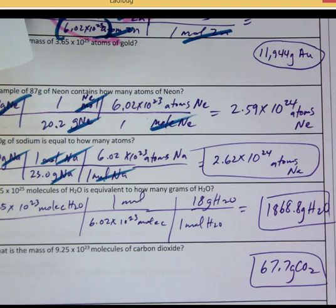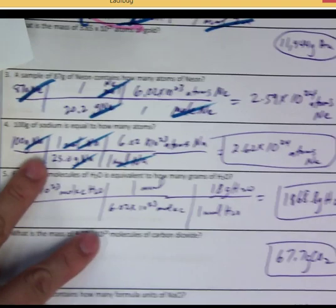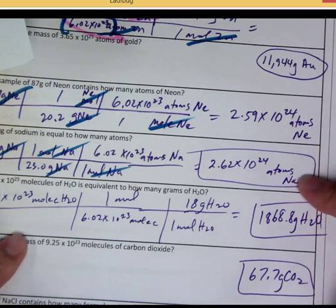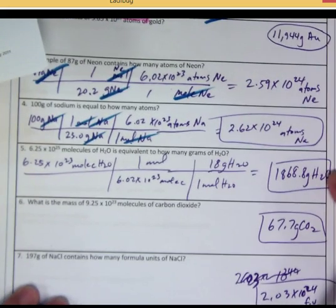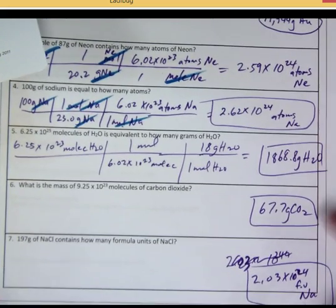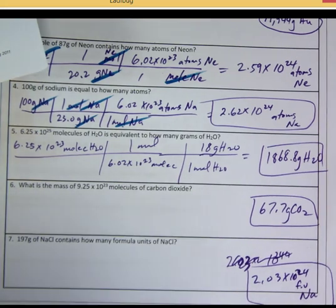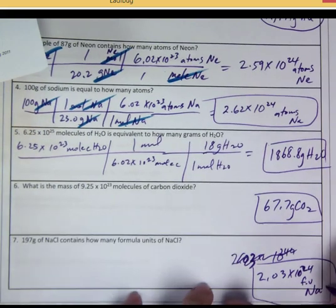All right. These are my answers to these problems here. Number 4 is 2.62 times 10 to the 24th. Number 5, 1,868.8 grams of water. Number 6, 67.7 grams of CO2. Number 7, 2.03 times 10 to the 24th, formula units of sodium. Okay? Sodium chloride, NaCl. So there you go.